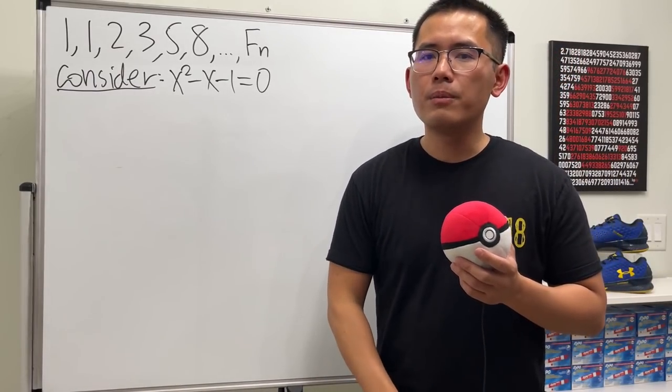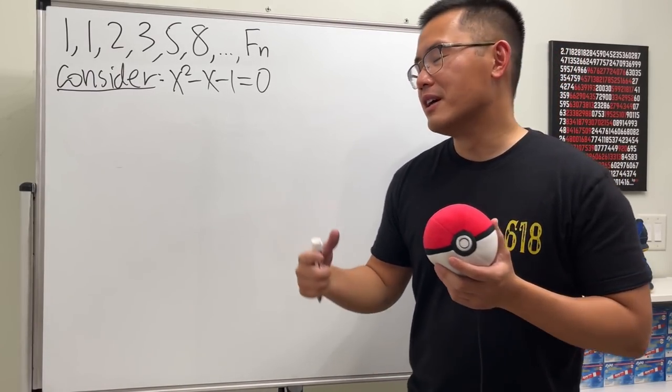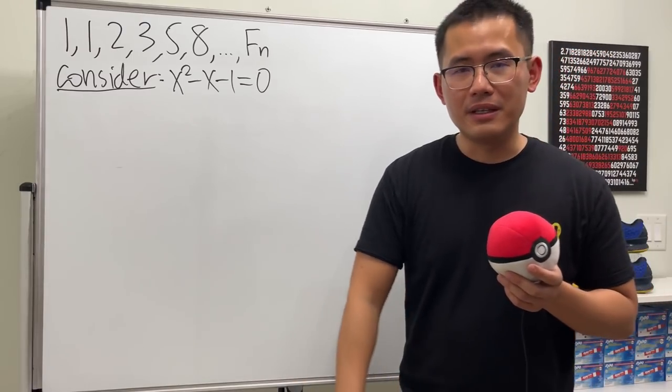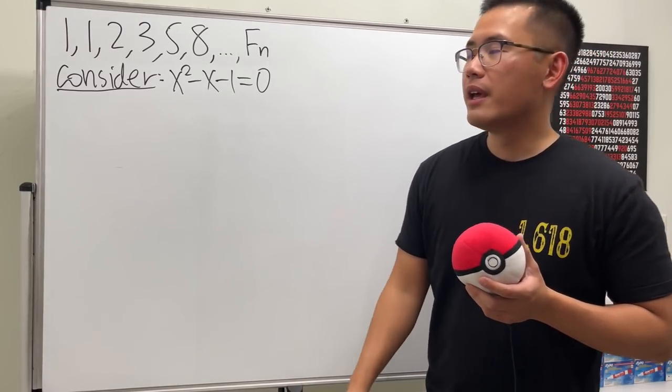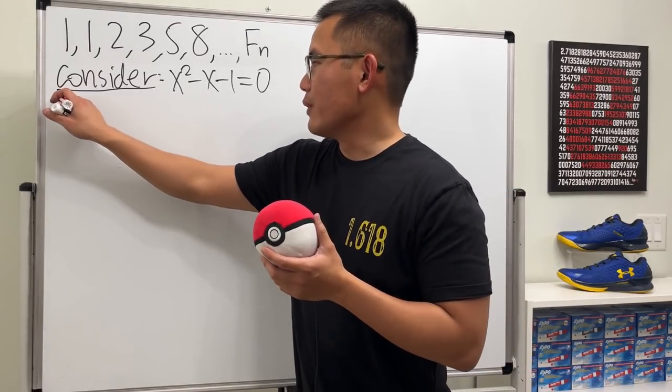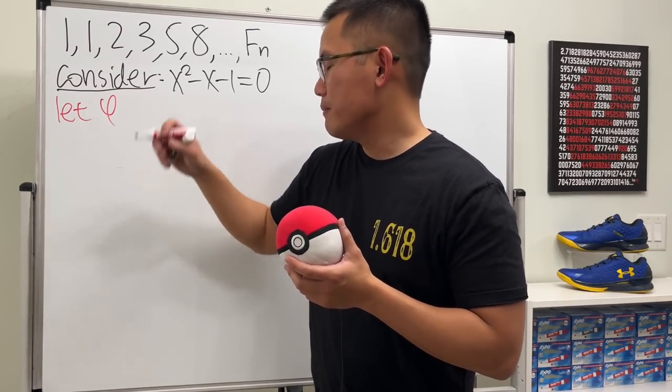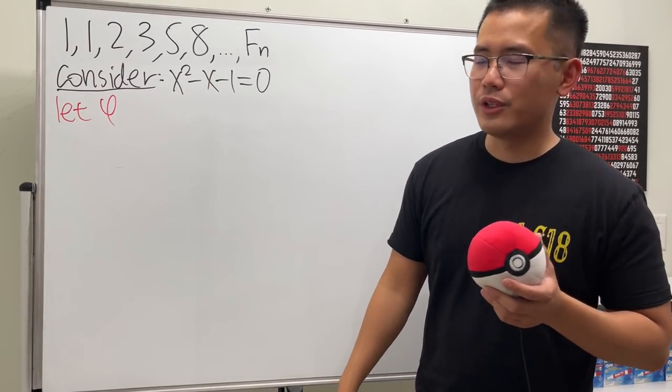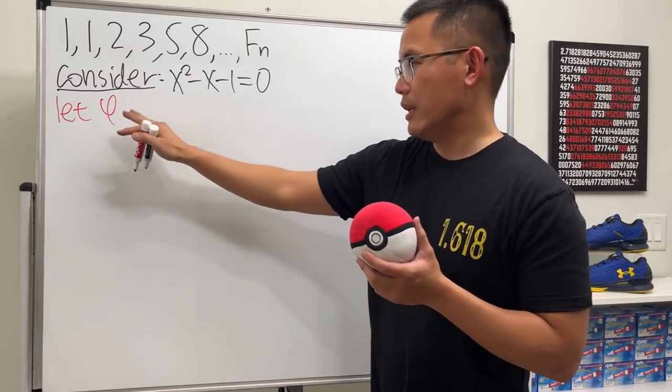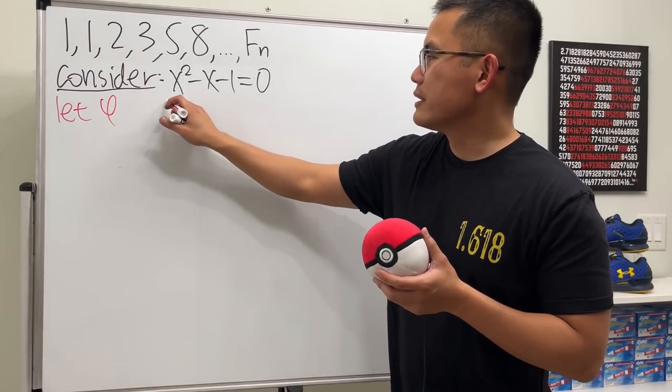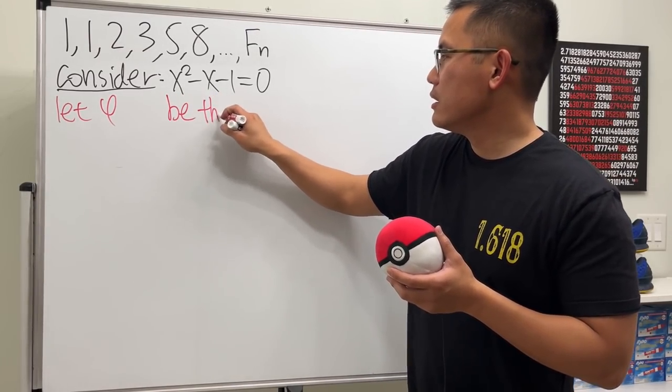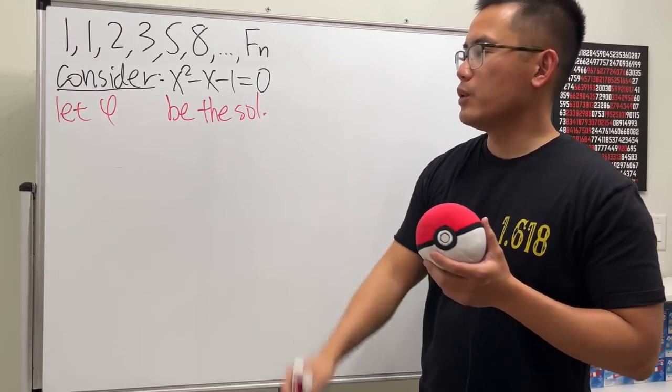We know this right here is simple but golden, because one of the solutions right here is the golden ratio. But for now, let me just do the following. You guys know that's the symbol for the golden ratio. And we also have another solution. I will just say, let φ be the solution to this quadratic equation.